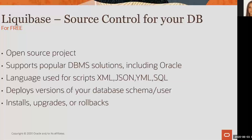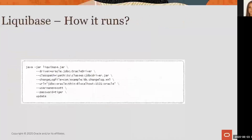How can you invoke Liquibase? You call the Liquibase JAR with Java, specifying the driver — since I'm using an Oracle database I use the Oracle driver — the changelog file containing all the changes you want to apply, the connection string to connect to your database, and the user and password for the schema. I'll be using the 'update' command to apply the changes specified in the changelog against the schema.